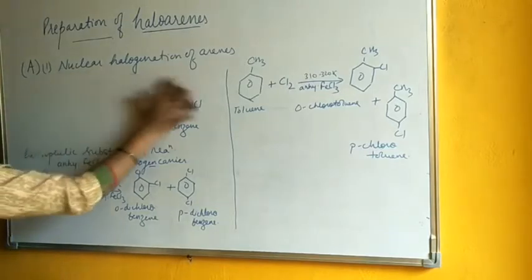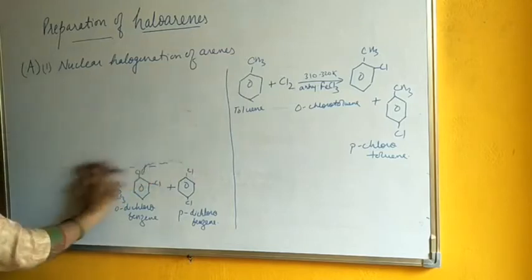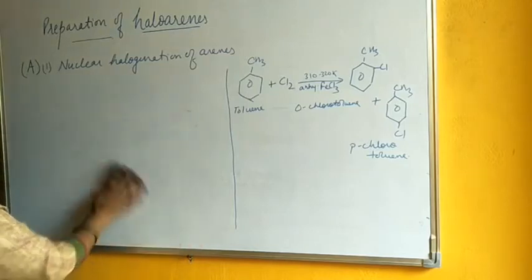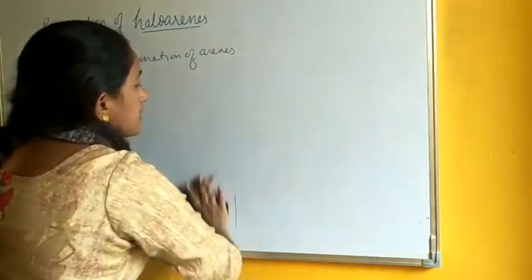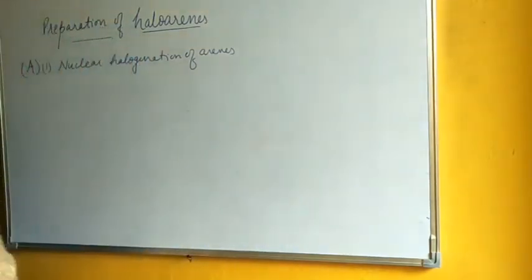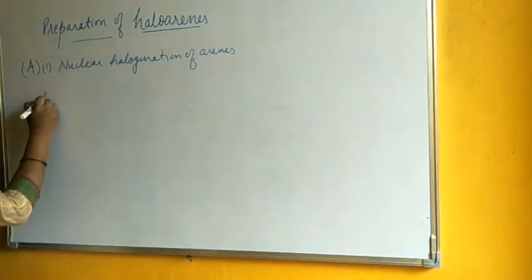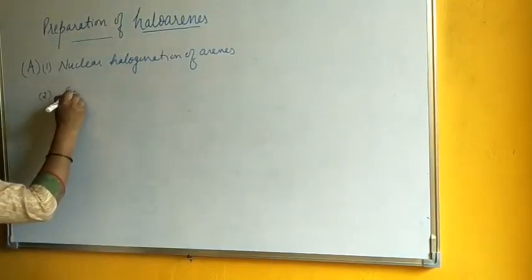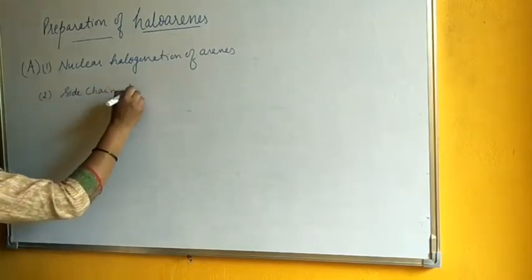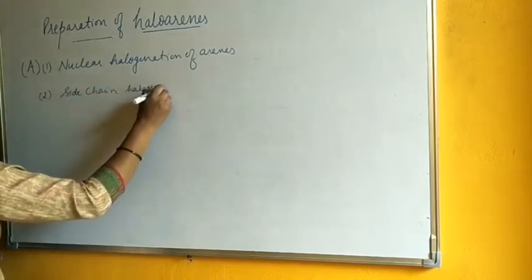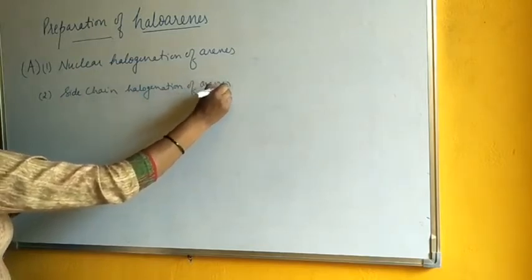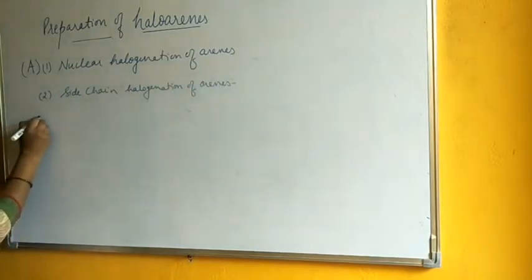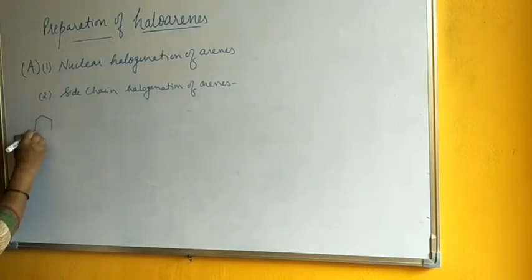When the temperature is increased or in the presence of sunlight, side chain halogenation of the benzene ring takes place. The second method is side chain halogenation of arenes. Let's take toluene (CH3) as an example.